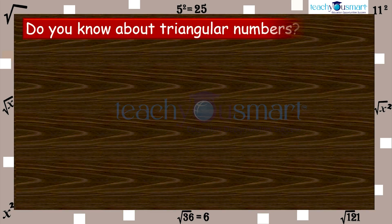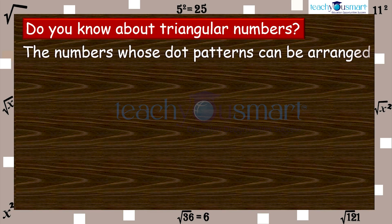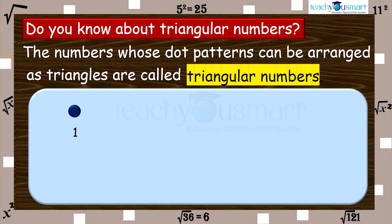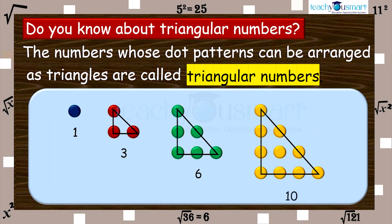Do you know about triangular numbers? Numbers whose dot patterns can be arranged as triangles are called triangular numbers. That is 1, 3, 6, 10, etc. are the triangular numbers.